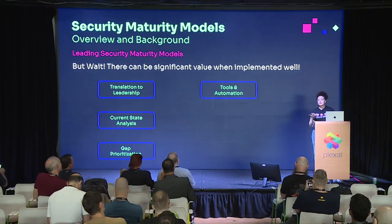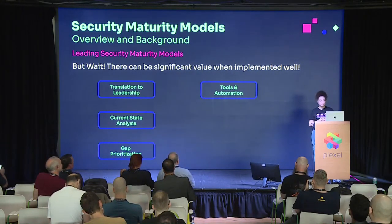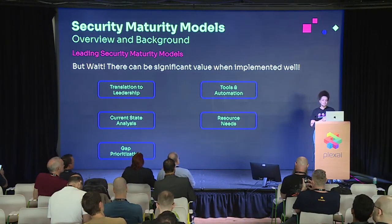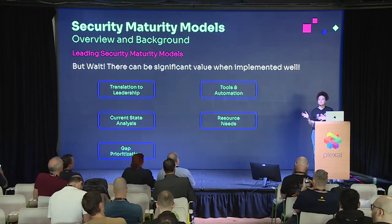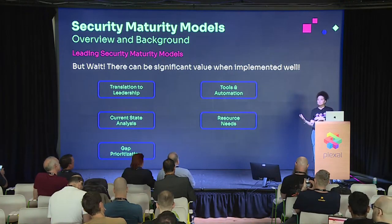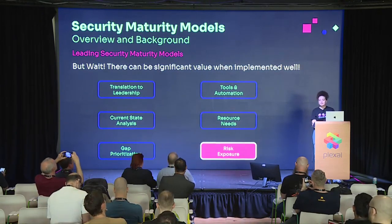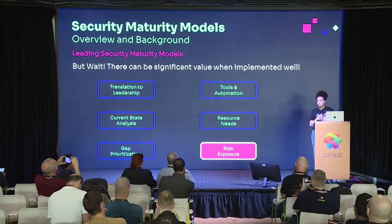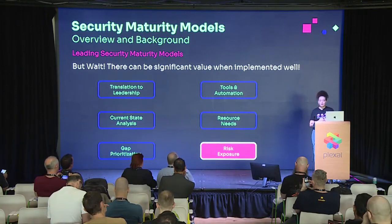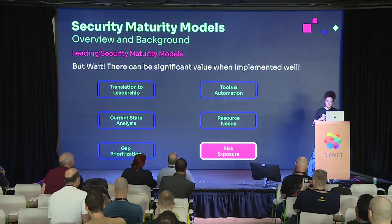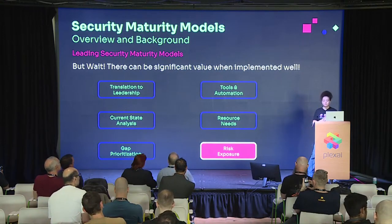Tools and automation: we have to automate. If a process is not automated, it's not going to last — it's going to die. Maturity models can show us our current state and what it's going to take to automate it. Resources needs: we're doing this right now at this level, but we want to be here — and these are the skill sets and resources we need to get there. This all helps with the translation to leadership. And last but definitely not least — probably the most important one — is risk exposure. We need to understand where the risks are and the level of those risks. Hopefully, this is making more sense now and you kind of got with me on the theme: maturity models are not that bad. They can actually bring us a lot of value.